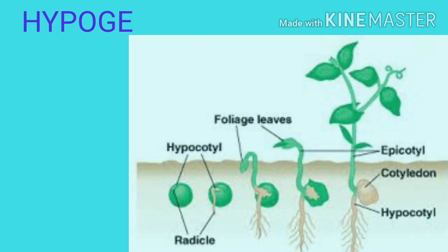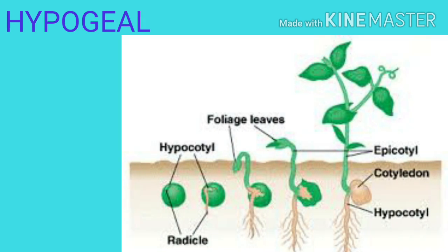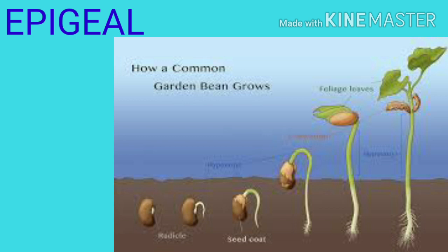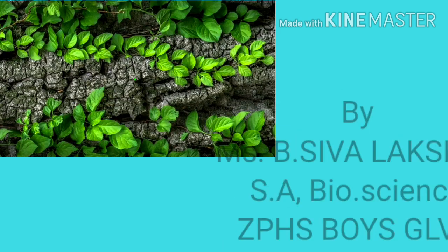If the epicotyl elongates, the cotyledons remain underground and the germination is then called hypogeal — example: peas and gram. If the hypocotyl elongates and cotyledons are pushed above the ground, this type of germination is called epigeal — example: castor and bean.